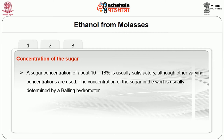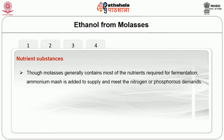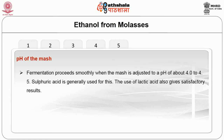The concentration of sugar in the wort is usually determined by a Balling hydrometer. The fourth important factor is nutrient substances. Though molasses generally contains most of the nutrients required for fermentation, ammonium salts are added to supply the nitrogen and phosphorus demands. The fifth important factor is the pH of the mash: fermentation proceeds smoothly when the mash is adjusted to a pH of about 4 to 4.5. Sulfuric acid is generally used for this purpose, and lactic acid also gives satisfactory results.